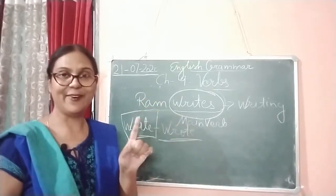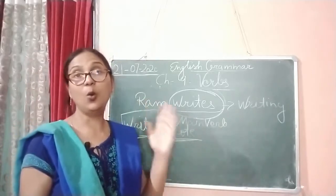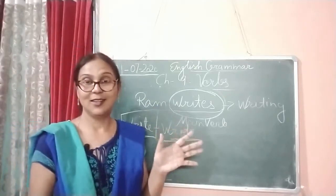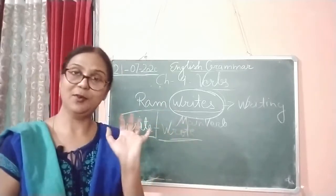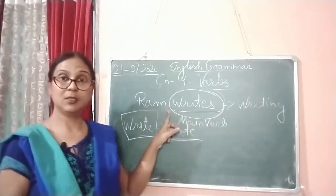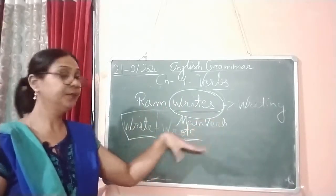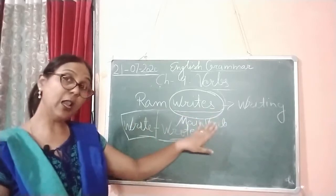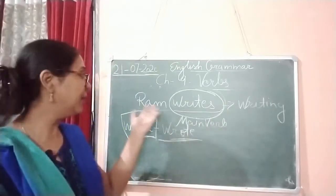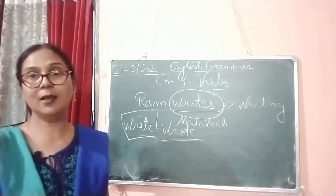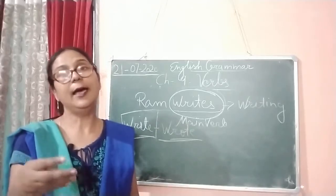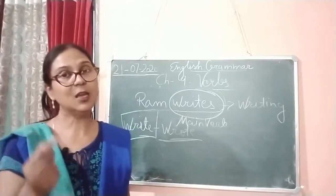The main verb can stand alone — it doesn't require anyone to support it. But it can also be used with helping verbs. For instance, in 'Ram writes,' the verb stands alone and gives you meaning. In 'Ram wrote,' it still stands alone and gives meaning. So in both types — with or without a helping word — the main verb can be used in the sentence.